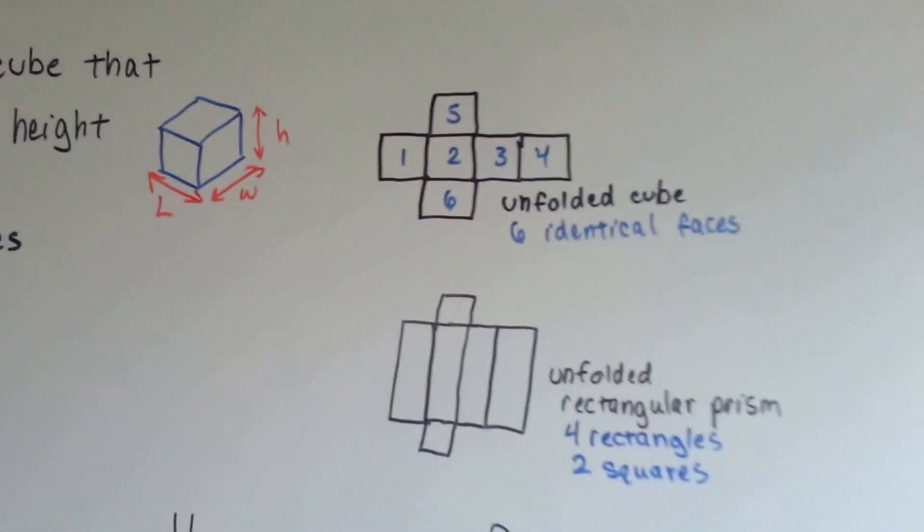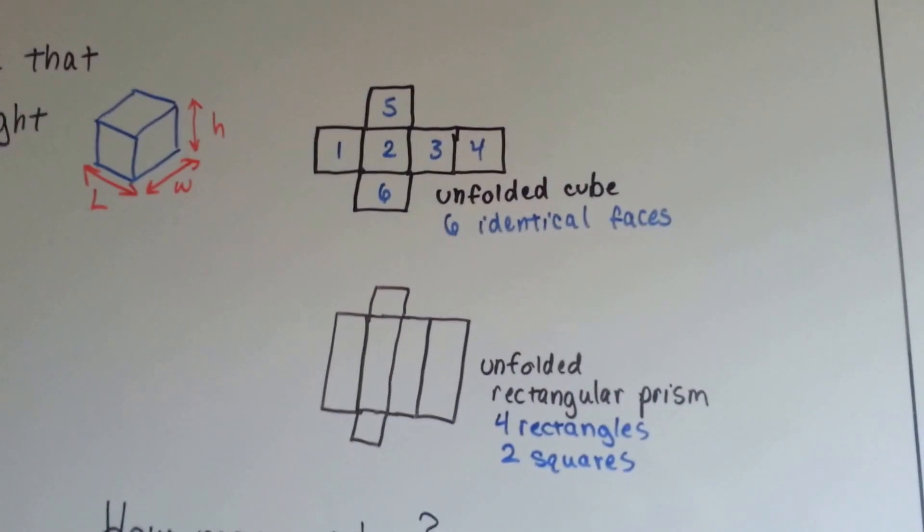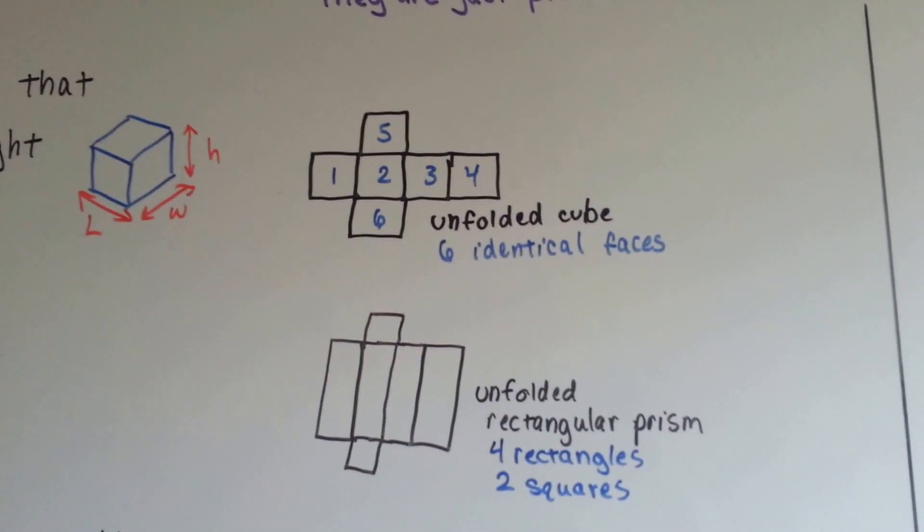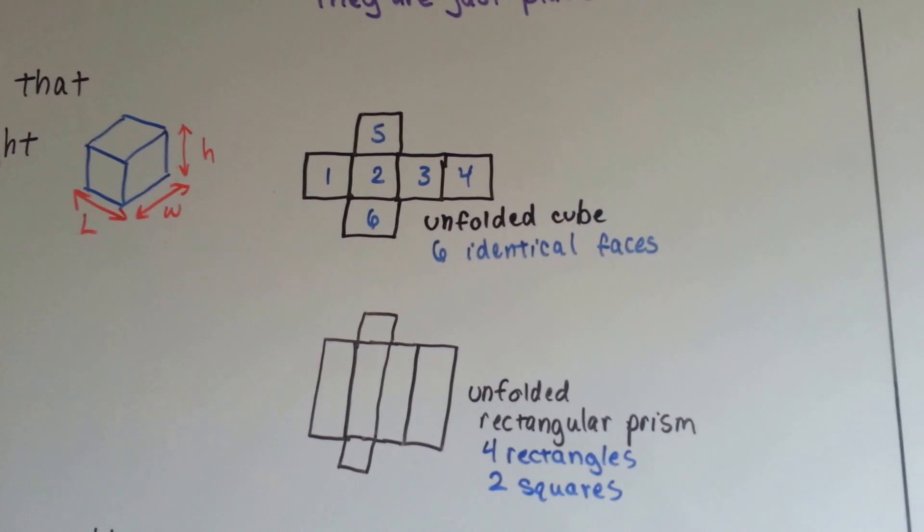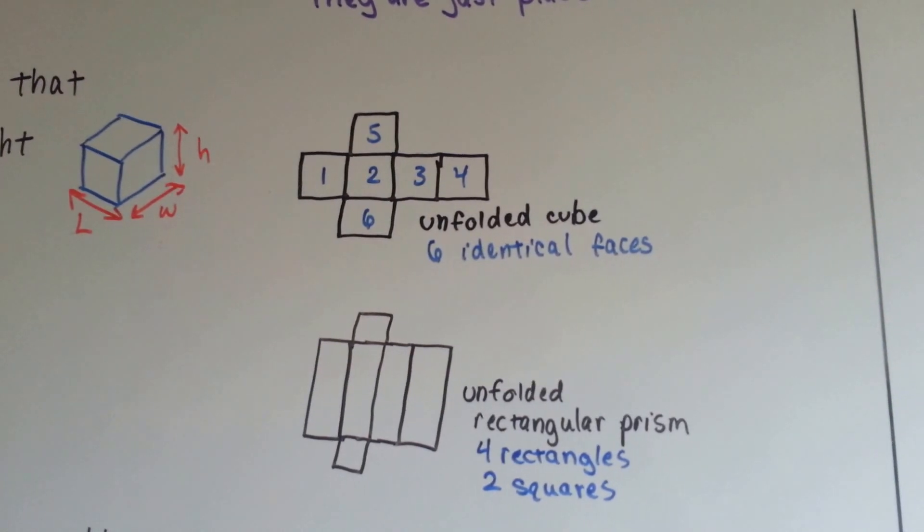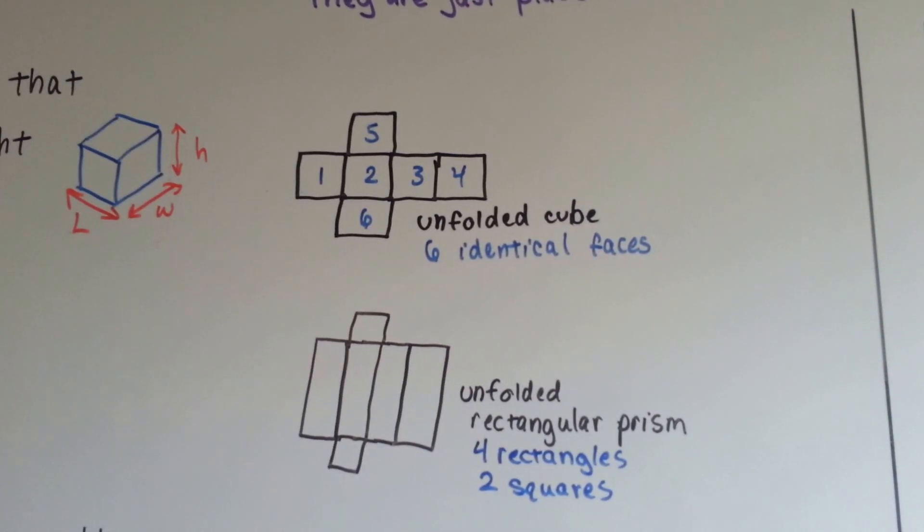If we unfold the cube, we can compare it to a rectangular prism unfolded, and we can see that the cube has six identical squares, where the rectangular prism has four rectangles and two squares.